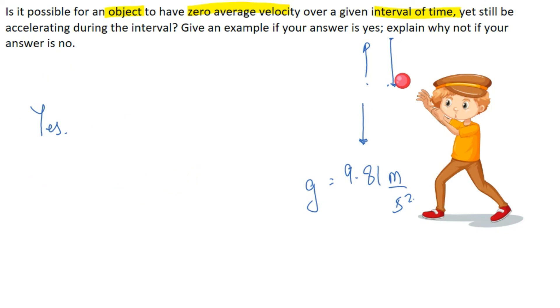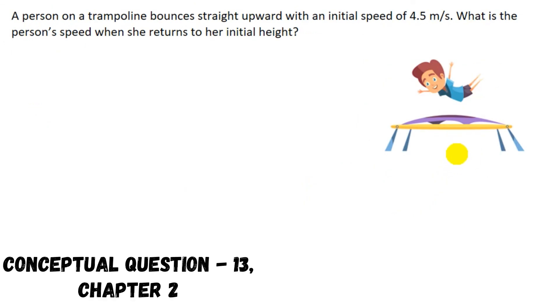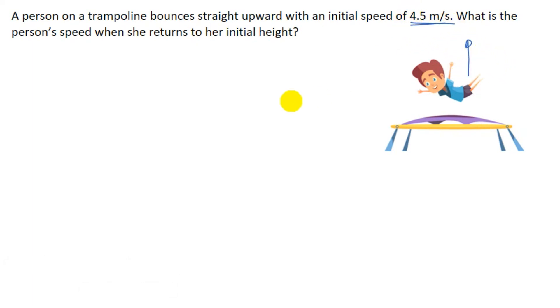Now here in this question it is given that a person on a trampoline bounces straight upward with an initial speed of 4.5 meter per second. Now the question is asking what is the person's speed when she returns to her initial height. Now when she returns to her initial height the speed would be same as that of initial. That is 4.5 meter per second. And this concept we have studied when we discussed the topic free fall. Now if you haven't seen that video click on the bell icon to see it.